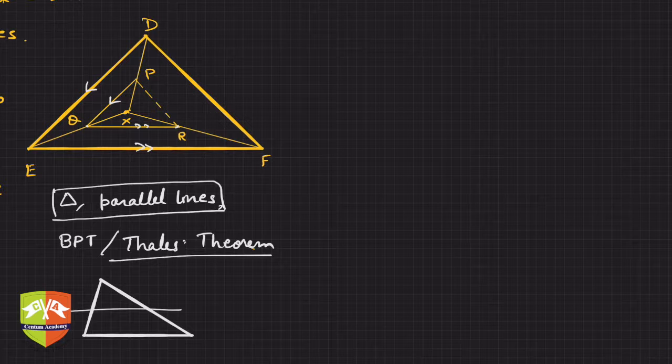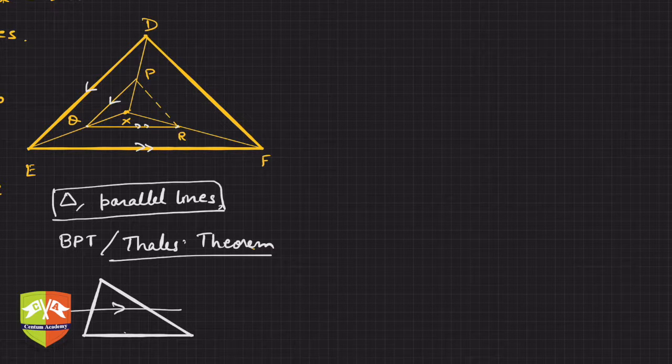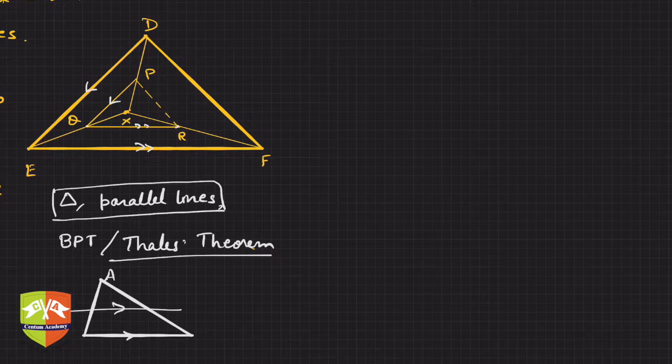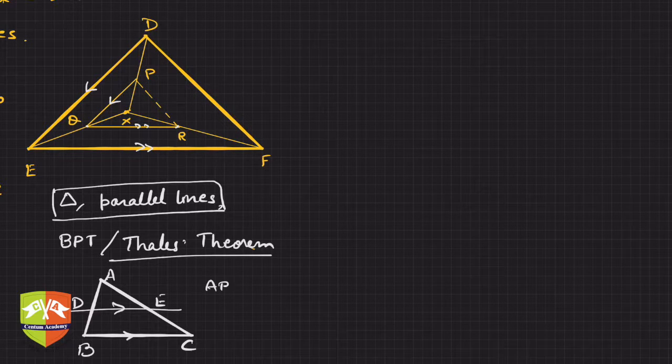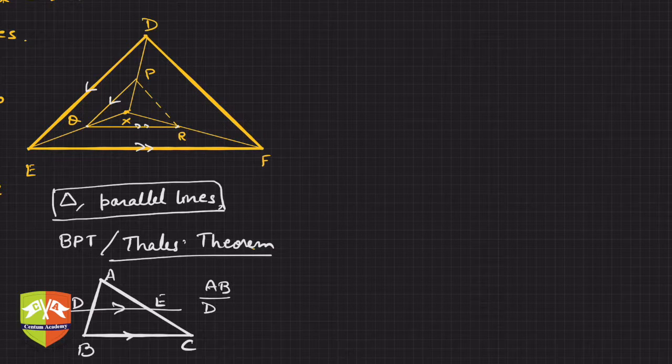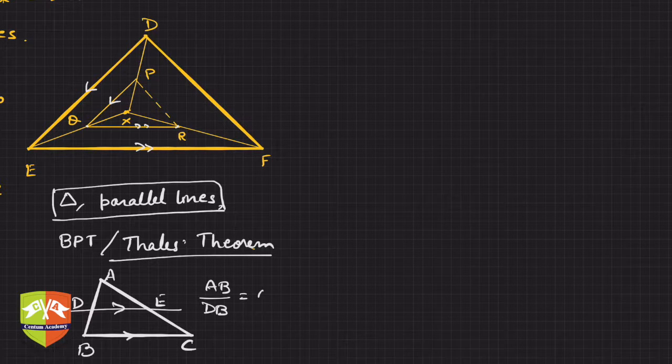If there is a triangle and there is a line parallel to one of the sides, let's say ABC, DE, then by Thales' theorem AB/DB is equal to AE/EC.